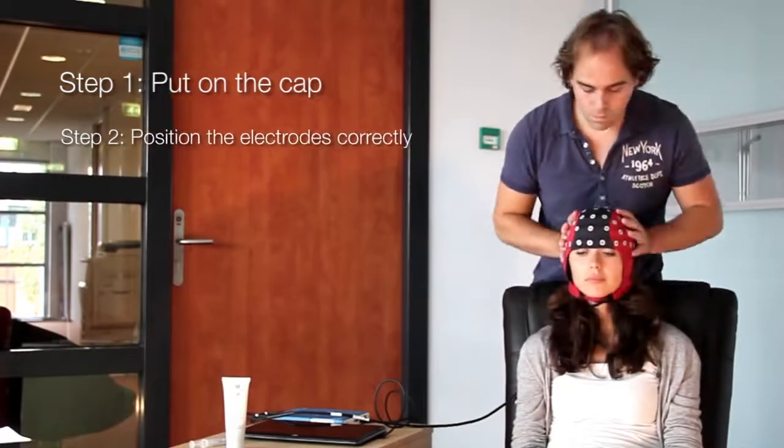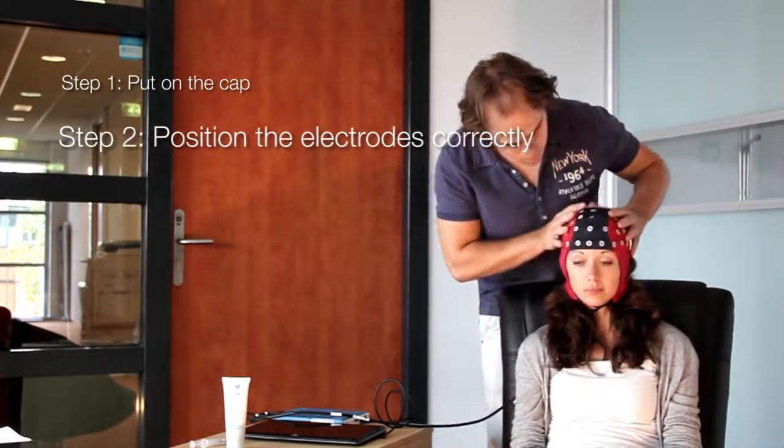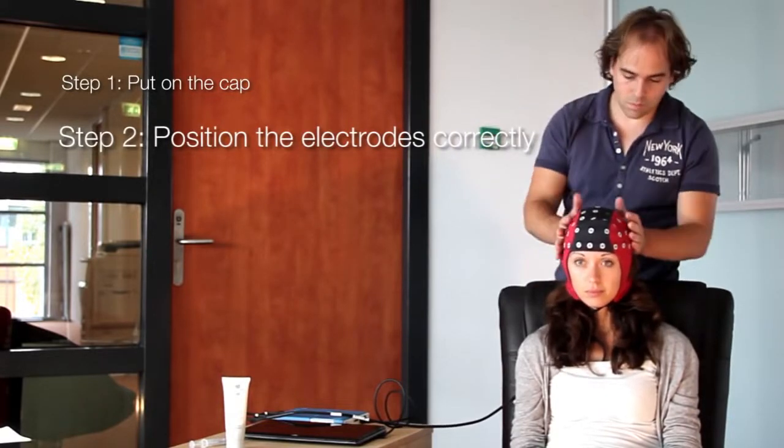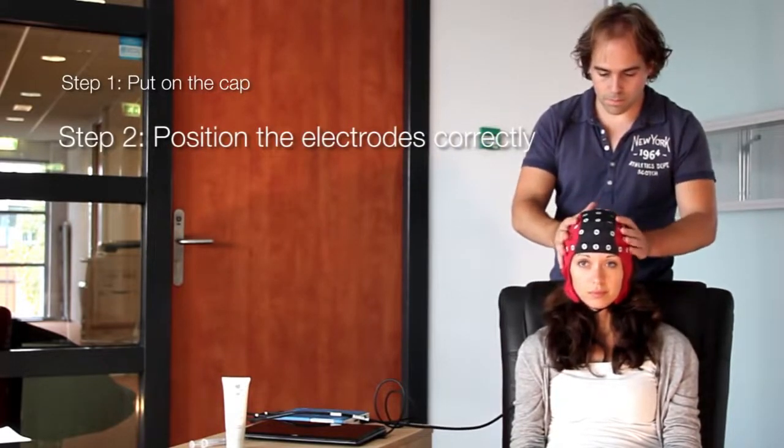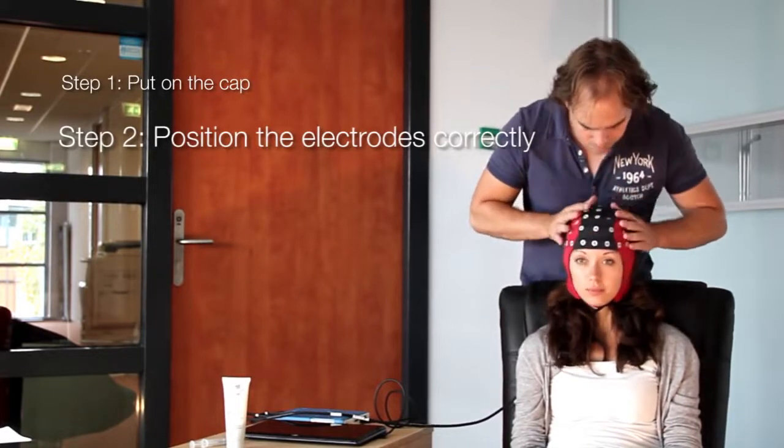Try to position the cap so that the electrodes fall over the proper positions. Check that the fabric is smooth and not wrinkled. Check that the cap is applied symmetrically with the midline electrodes over the nasion-inion line and that the cap is properly centered.